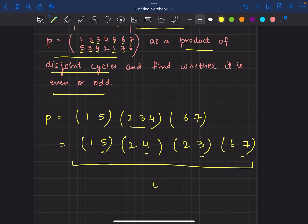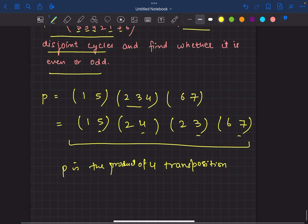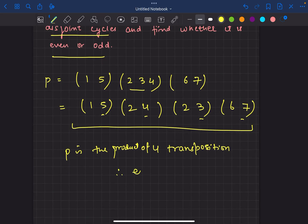So 4 transpositions. P is the product of 4 transpositions. Therefore, even. What is even permutation?